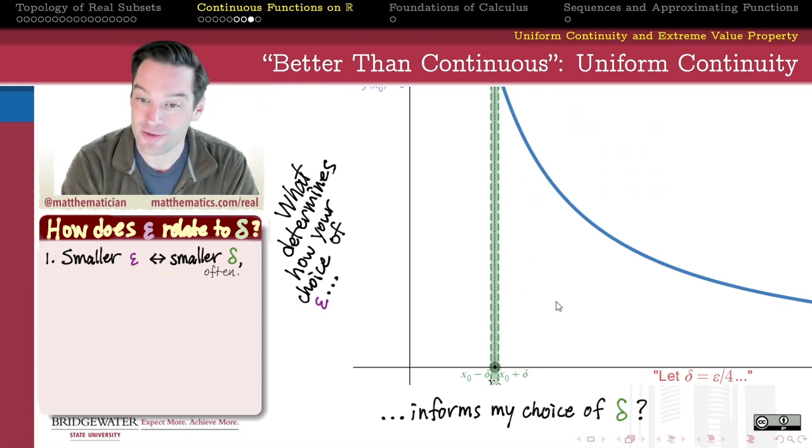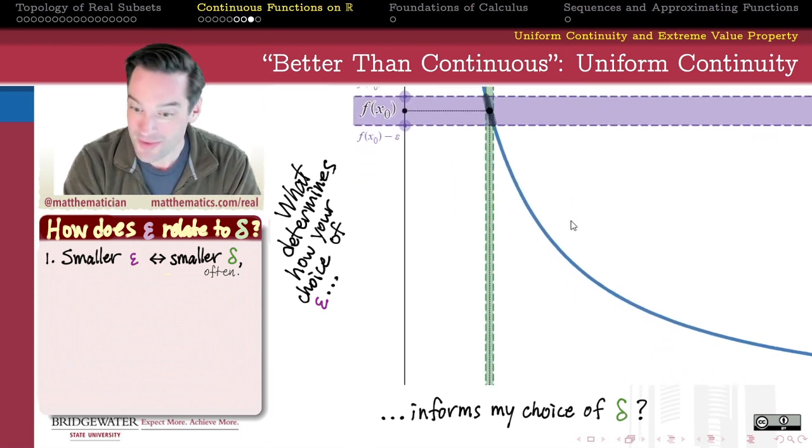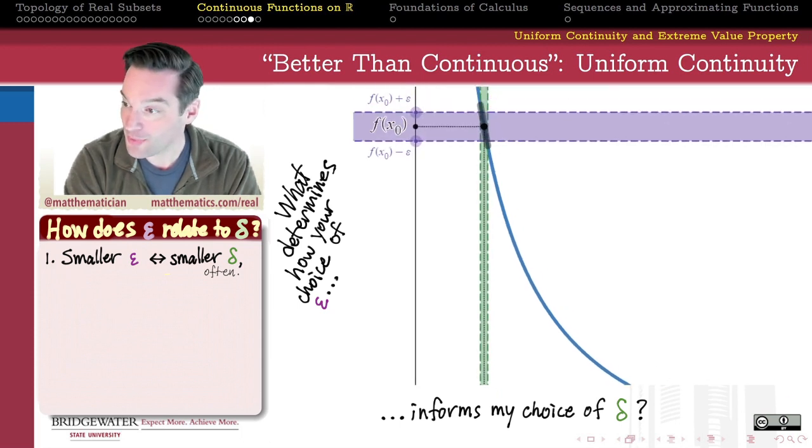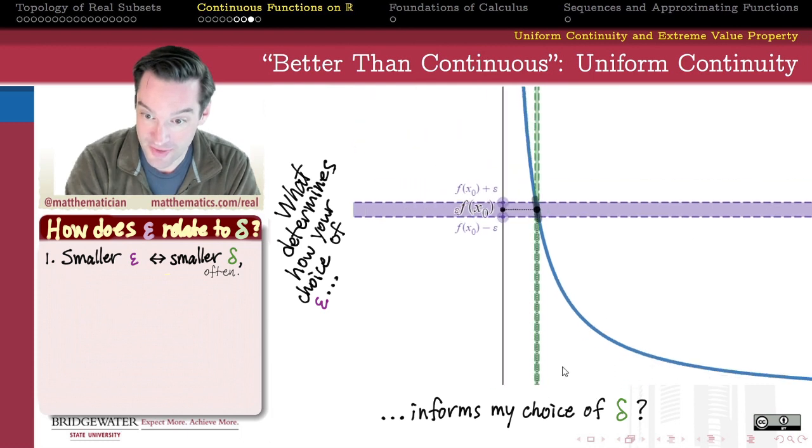And so then probably what I do in response is I probably decide to choose a smaller delta. Like maybe, oh, let's go to delta equals epsilon over 4. Now it kind of looks like maybe it works again. But it could just as well be possible that that choice also stops working after a certain point. And in fact, that is the case in this example.